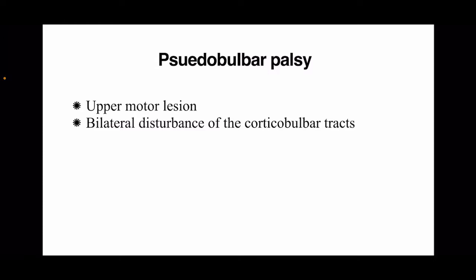Pseudobulbar palsy is a UMN lesion, most commonly due to a bilateral disturbance of the corticobulbar tracts. The best example would be a bilateral infarct, which can occur especially in a hypotensive patient exposed to a bout of hypotension, causing bilateral disturbance of the tracts.